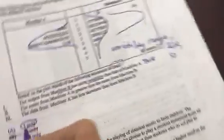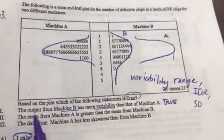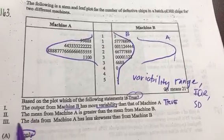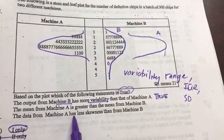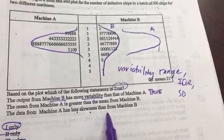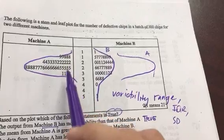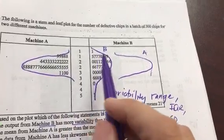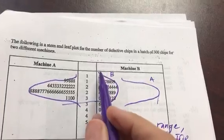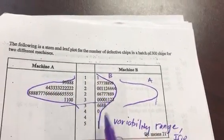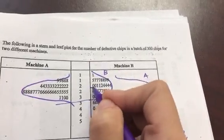Right now I can eliminate B and C. Now let's keep looking. It says the data from Machine A has less skewness, and I would agree with that. This is more symmetrical, and this one's got a few more numbers here on the top side. It's got one number down here in comparison left to right, but it's got four, five, six numbers up here.